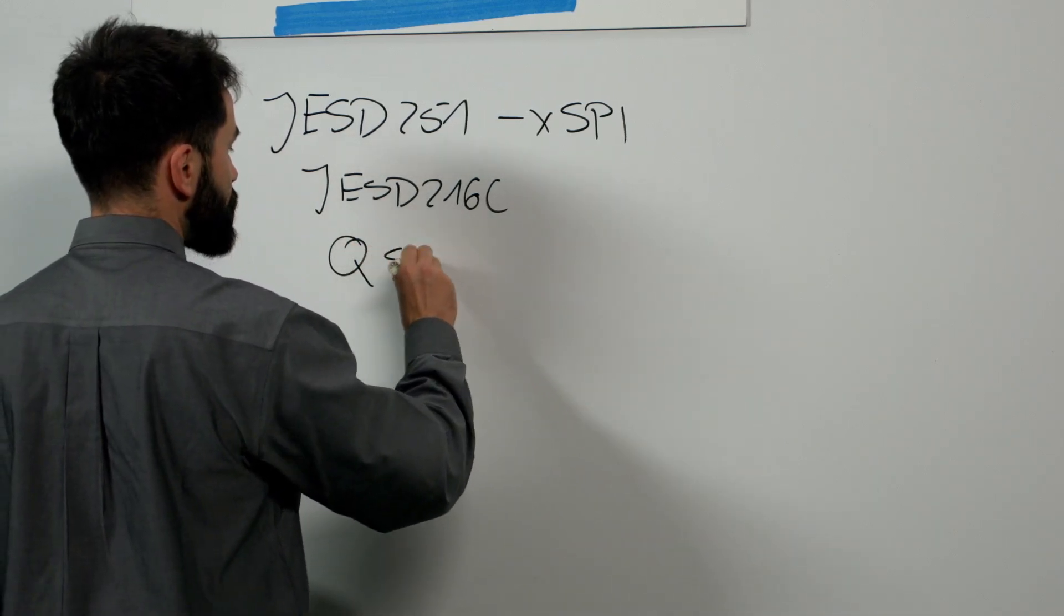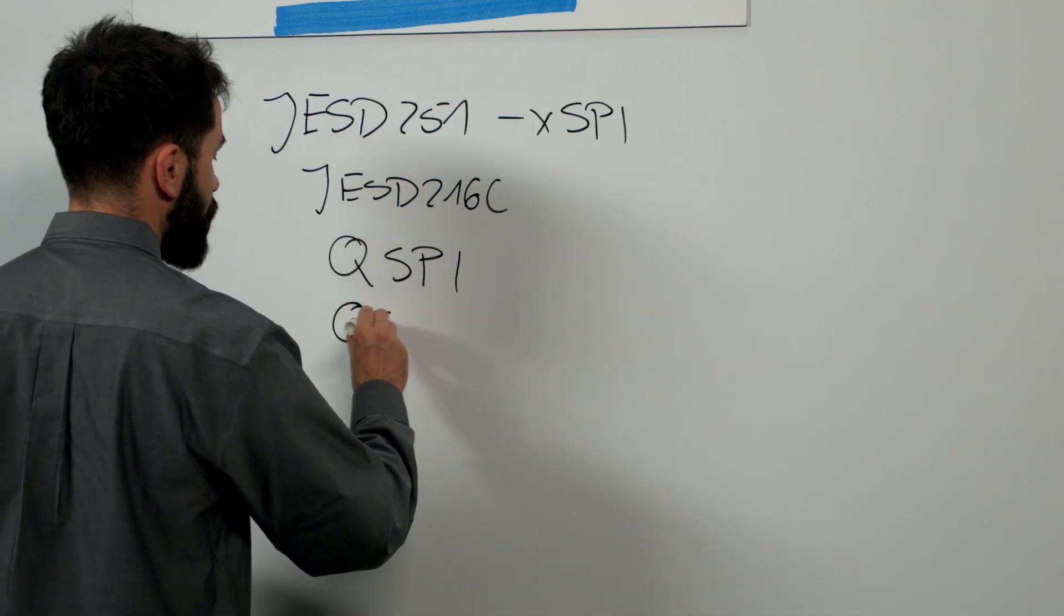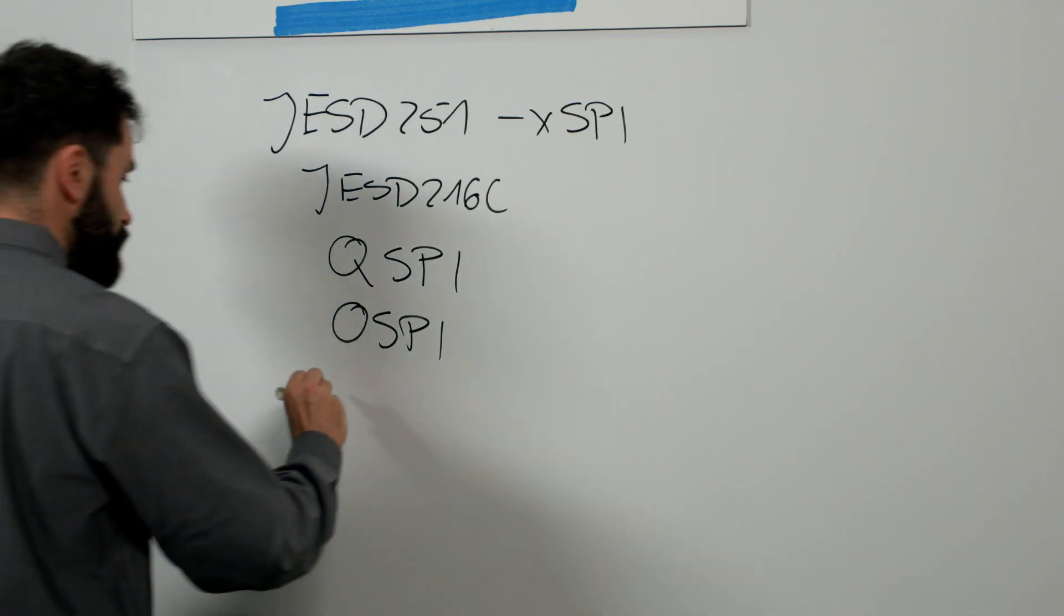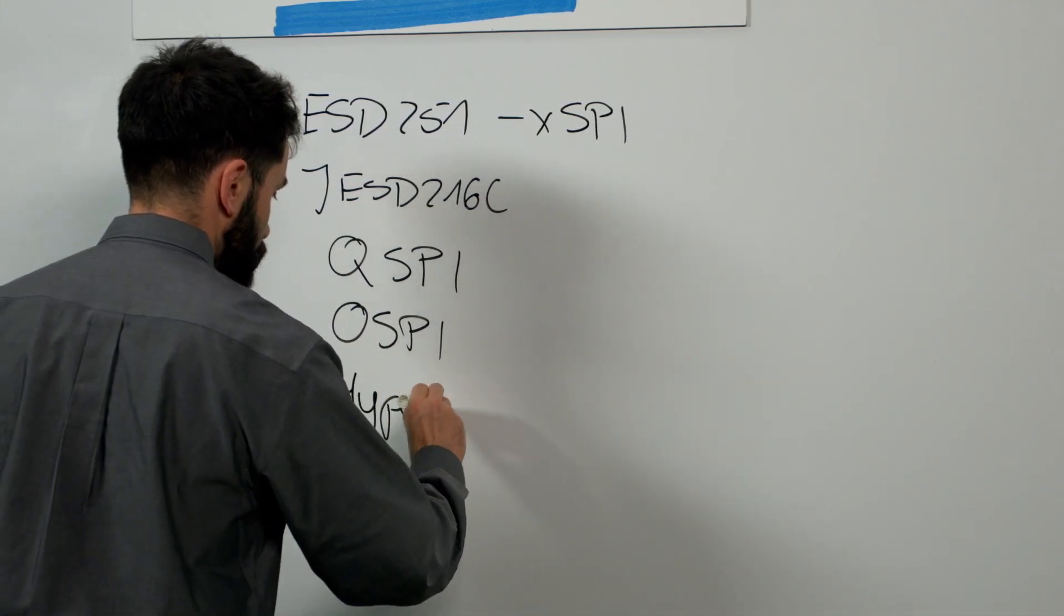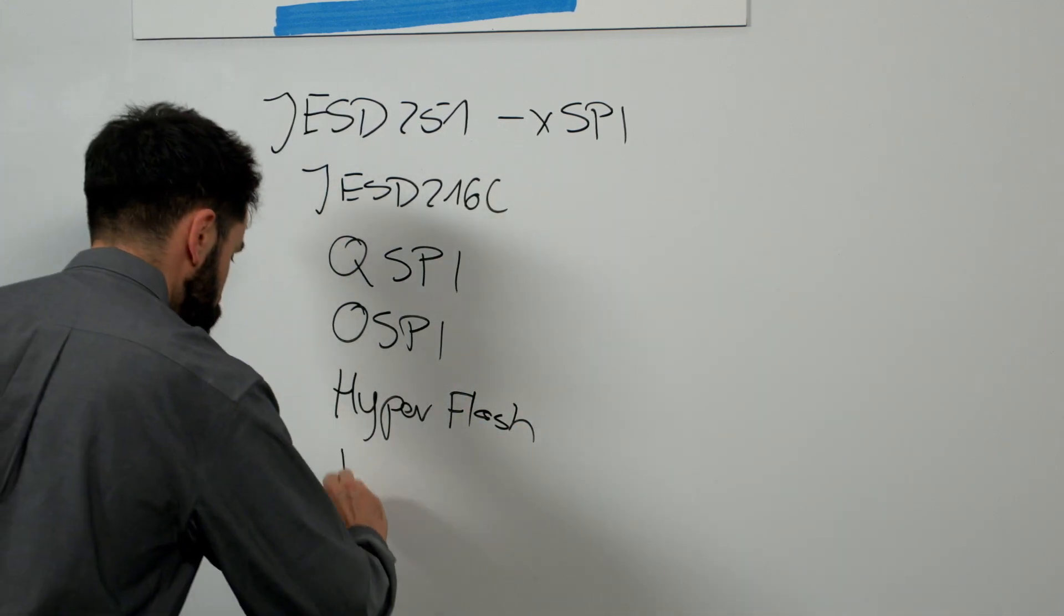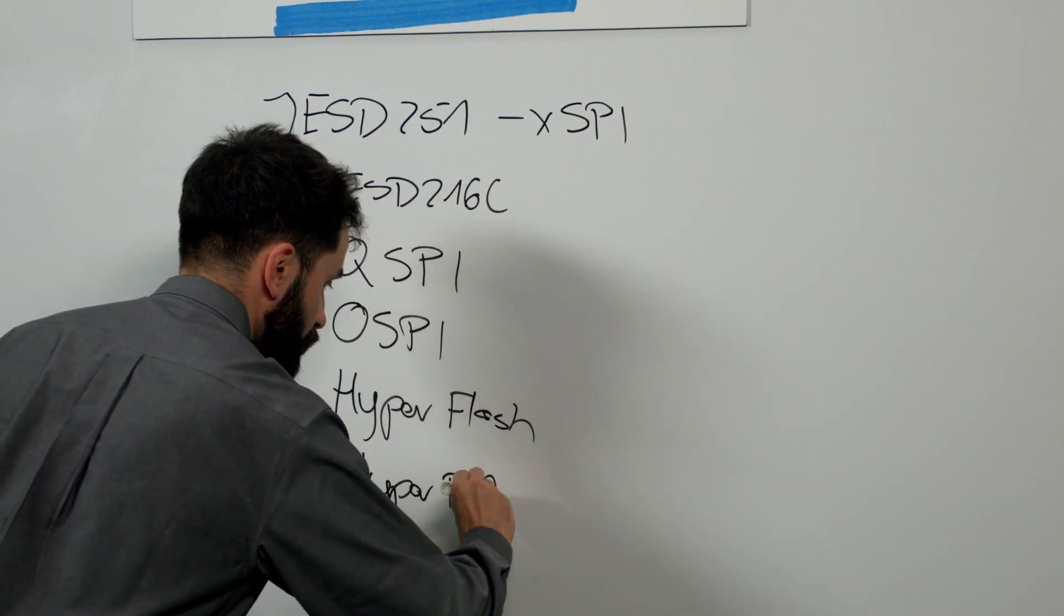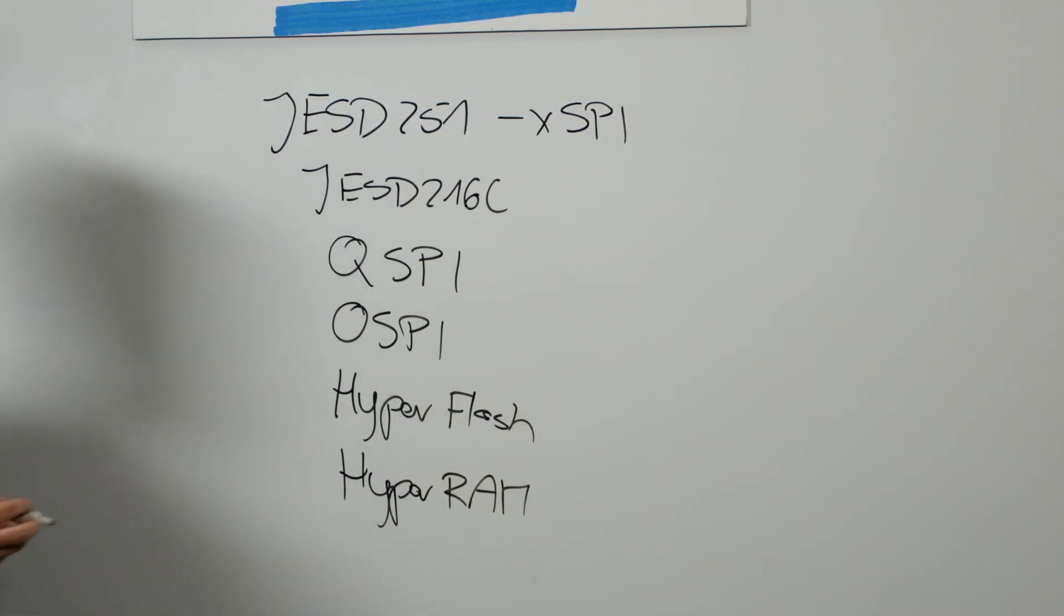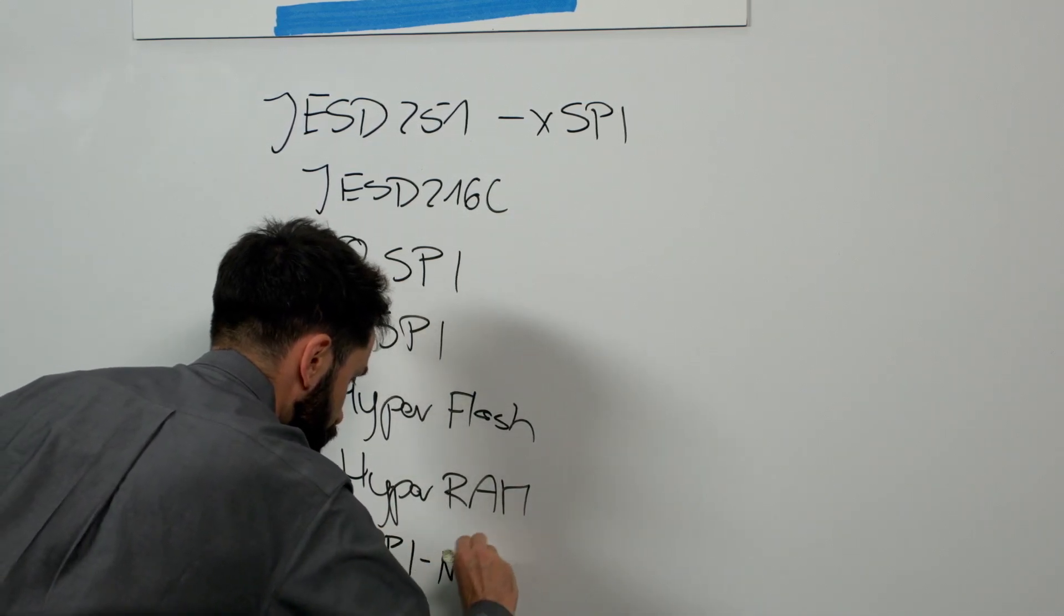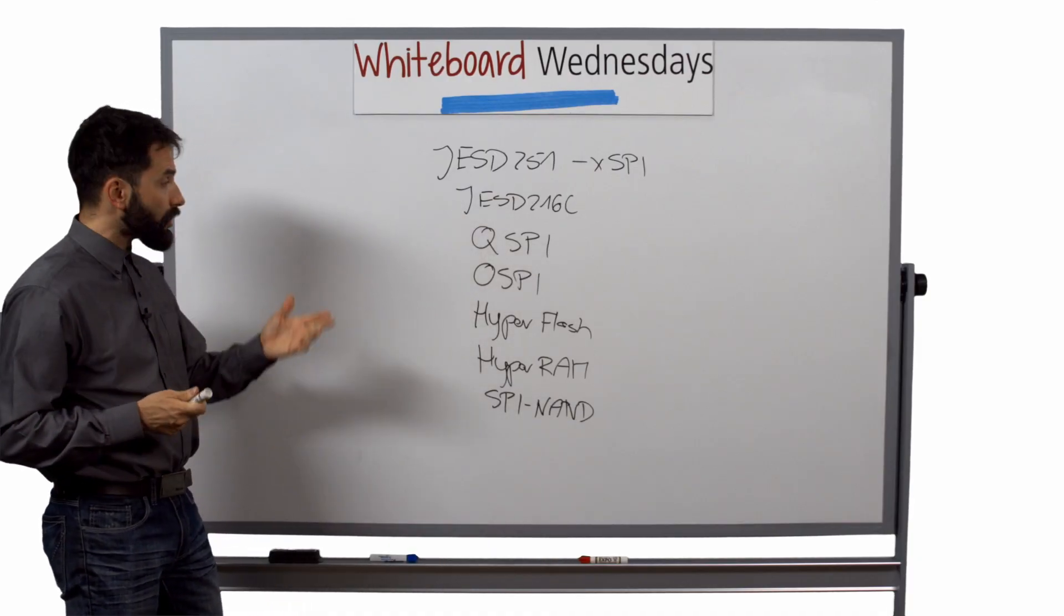The other specifications that are covered by the XSPI are, as I mentioned, QSPI, so the Quad one, Octal SPI, HyperFlash, HyperRAM, and SPI NAND. So as you can see, there are quite a few.